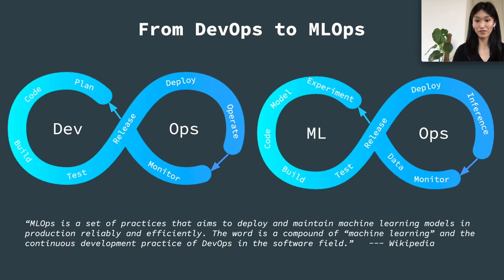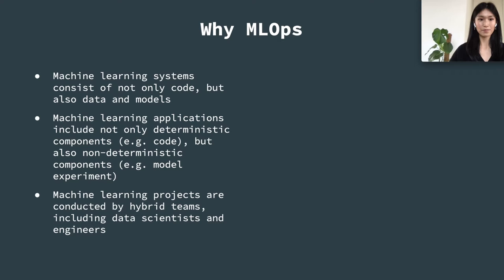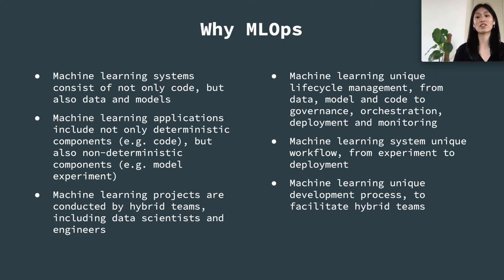So why MLOps instead of just pure DevOps? Machine learning systems consist of not only code, but also data and models. Machine learning applications include not only deterministic components such as code, but also non-deterministic components such as model experiments. And machine learning projects are conducted by hybrid teams, including not just engineers, but also data scientists. Due to all these characteristics of machine learning practice and unique lifecycle management — from data, model, and code to governance, orchestration, deployment, and monitoring — and the unique workflow from experiment to deployment, MLOps is born.